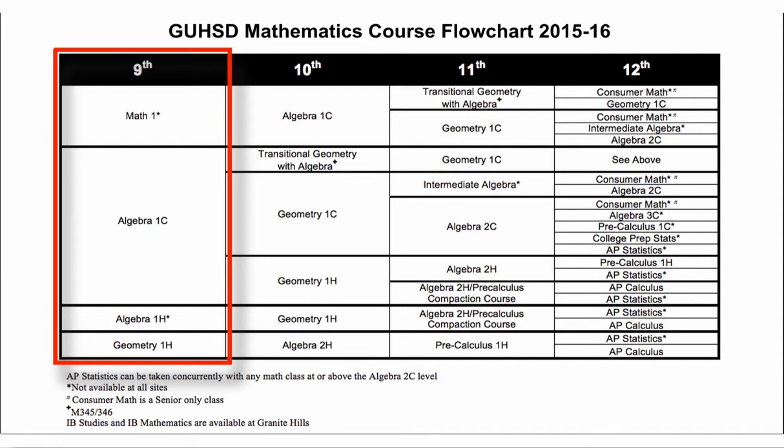It's important to note that regardless of where a student enters, their math education is supported throughout their 4 years in the Grossmont District. Students may meet their high school graduation requirement of the Algebra 1c course and one year beyond that, as well as their college and career readiness, by their 12th grade year.